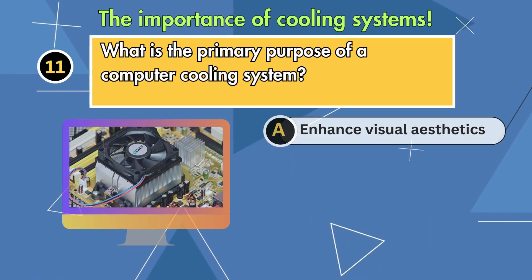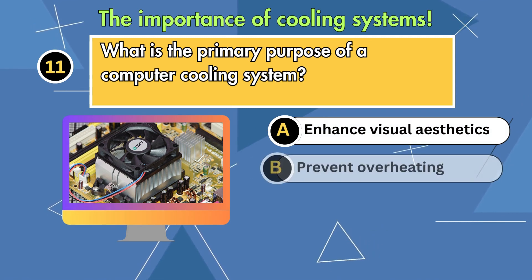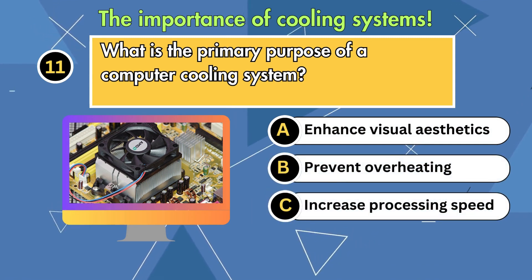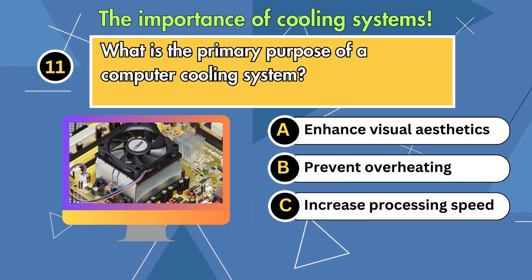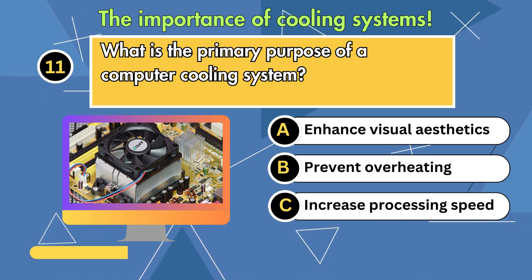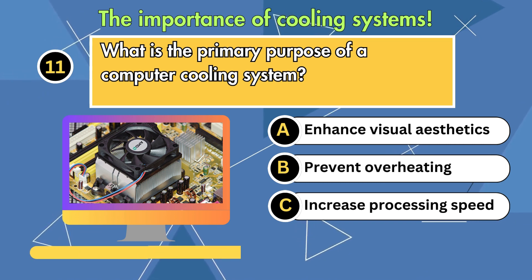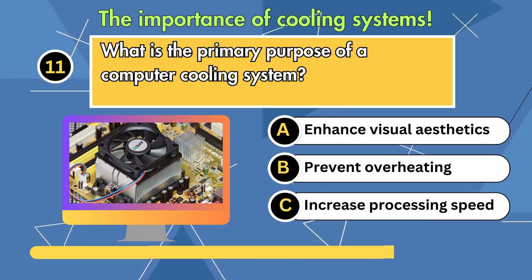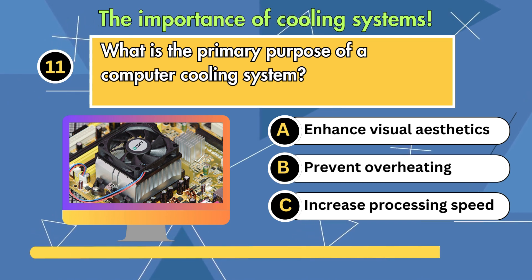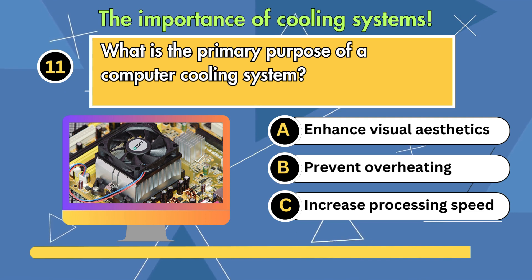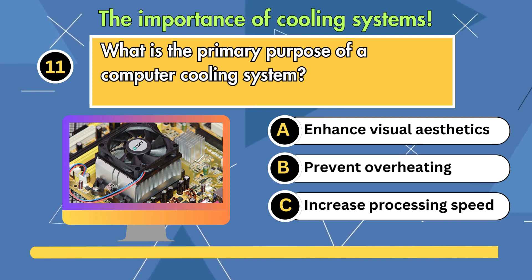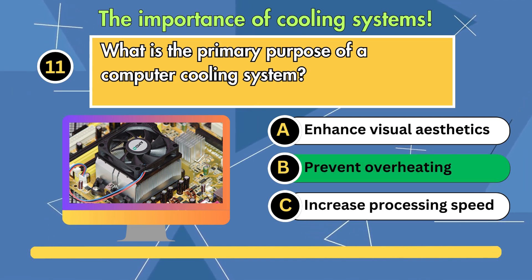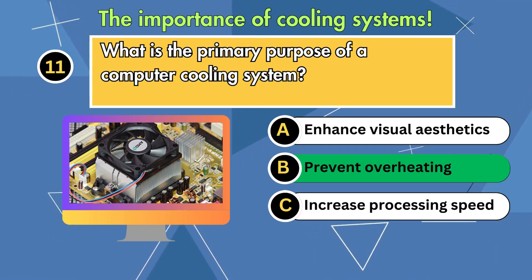What is the primary purpose of a computer cooling system? Option 1: Enhance visual aesthetics. Option 2: Prevent overheating. Option 3: Increase processing speed. Answer is prevent overheating.